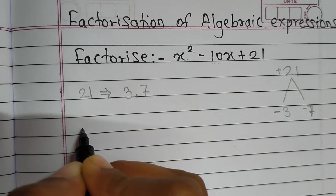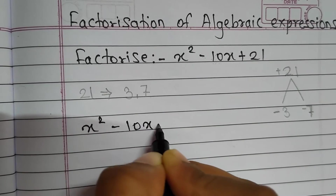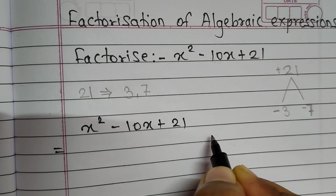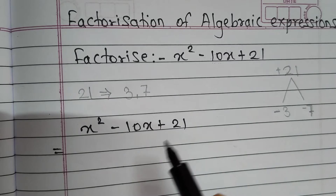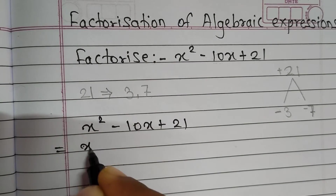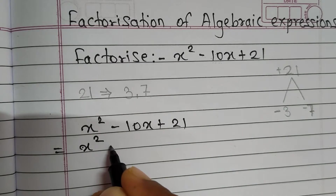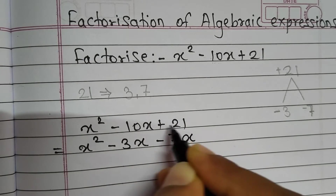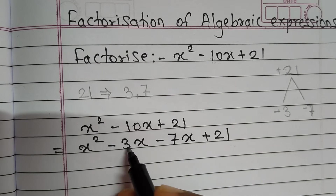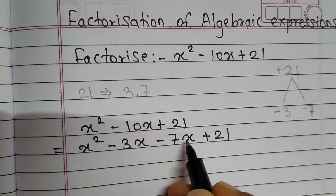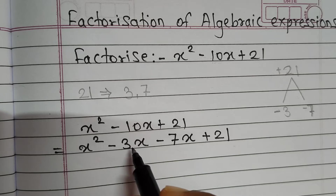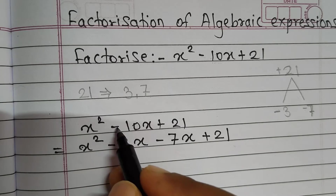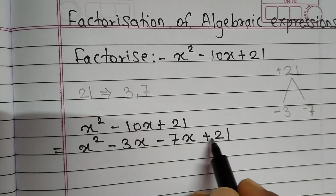So for the same example, x² minus 10x plus 21: we write x² the same, we write plus 21 the same, and only we replace minus 10x with minus 3x minus 7x. Minus 3x minus 7x — minus plus minus becomes a subtraction, and 3 plus 7 gives you 10x, so that gives minus 10x. Plus 21 is kept the same.